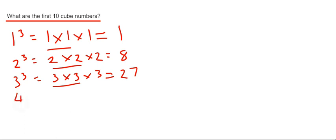So let's do 4 cubed next. So this is 4 times 4 times 4. So work out 4 times 4, that's 16. And then times it by another 4, which is 64.